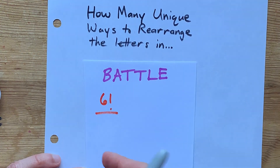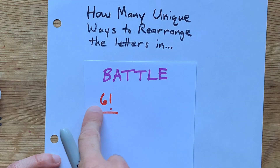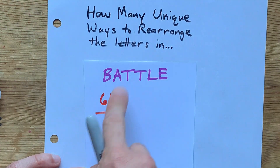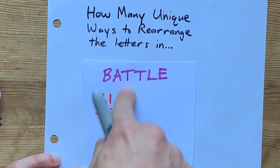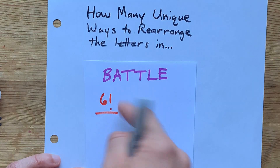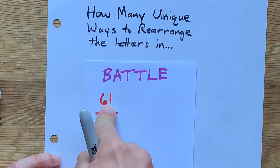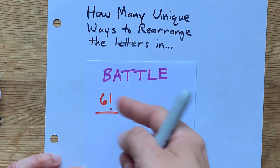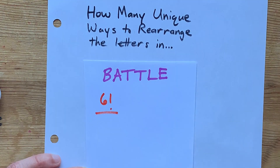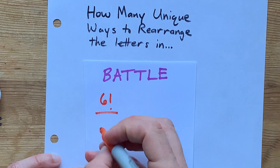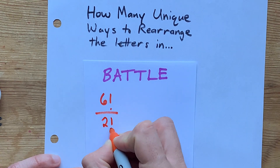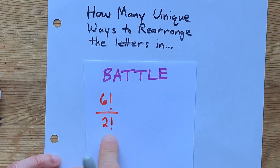So you start with six factorial. There are six options and you pick one for the first letter, then another for the next letter, and so on. You've got to divide by an extra two factorial for the double T's.